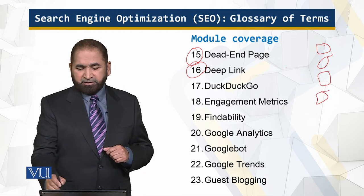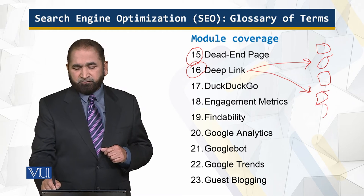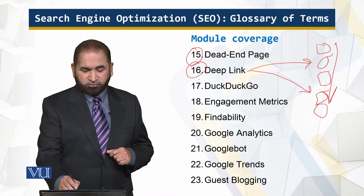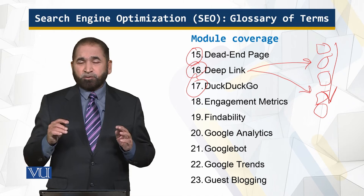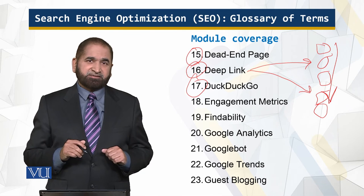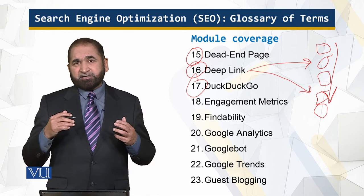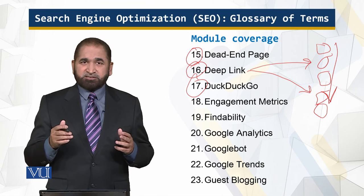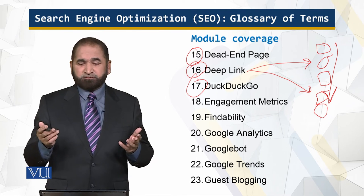A deep link means you can go and land on a specific page directly without sequentially moving through other pages. DuckDuckGo is a search engine popular for preserving user privacy — it does not perform as well as other search engines in terms of response and results, but it does not share your data with others.